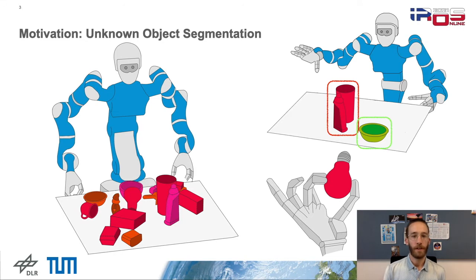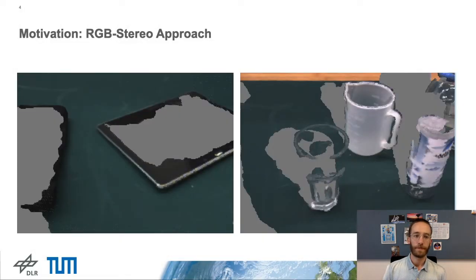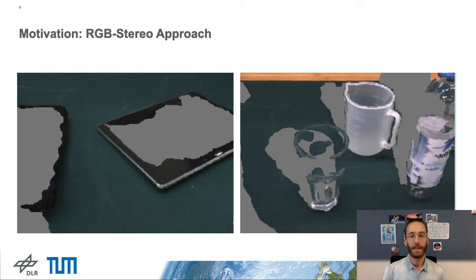In the area of unknown object segmentation, some cool work is already out. Most of these approaches mainly rely on depth information, since it includes valuable cues for object boundaries. However, although the quality of depth estimation sensors has increased a lot over the last years, we still face situations in our lab in real-world scenarios where we obtain incomplete depth maps. Transparent objects, metallic or black objects, as well as bright light, are kryptonite for depth estimation. Further, shiny and untextured surfaces can also cause problems.